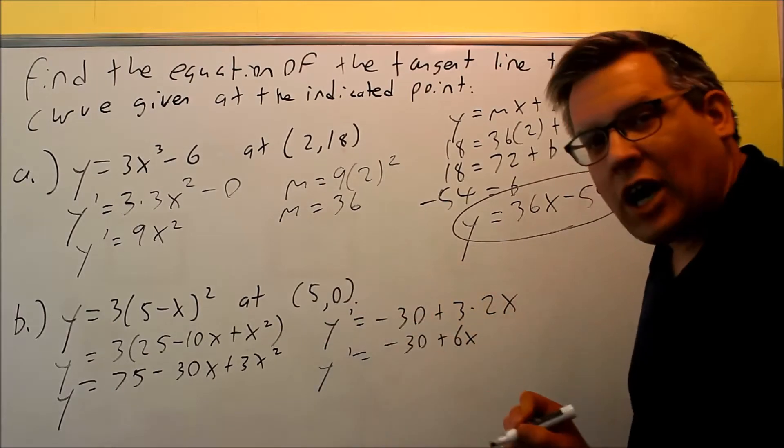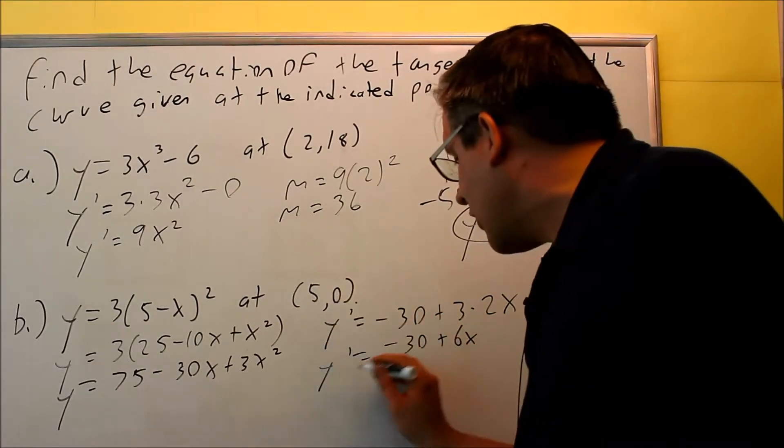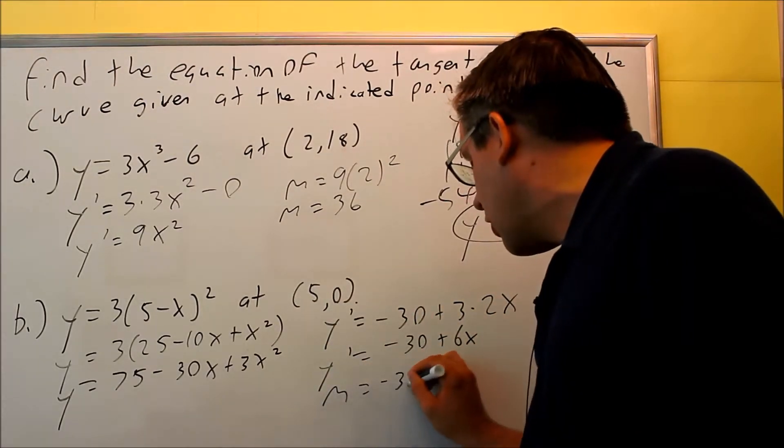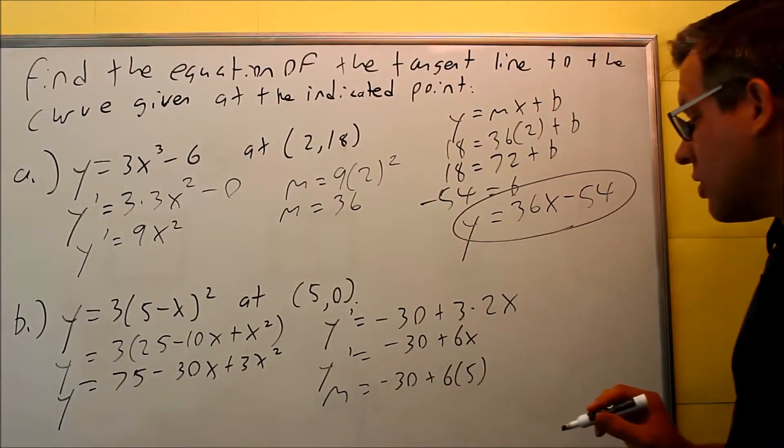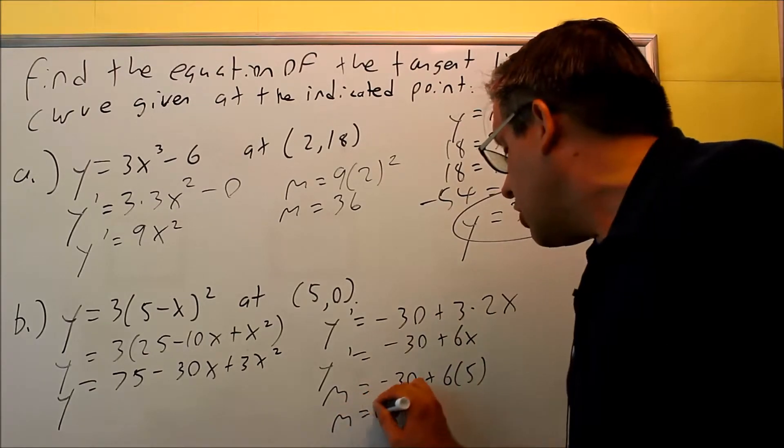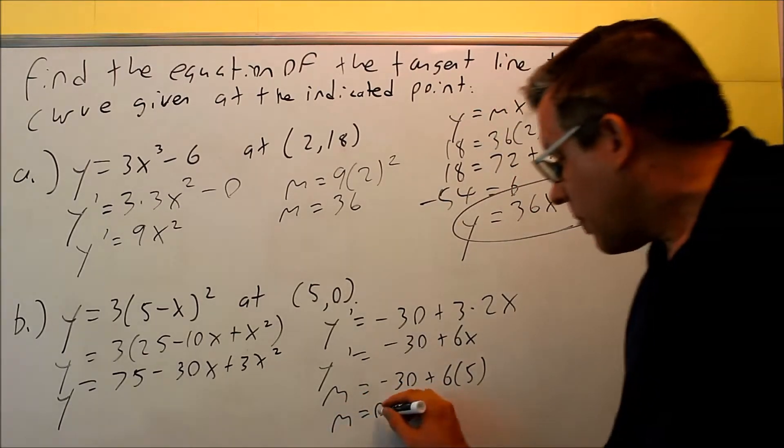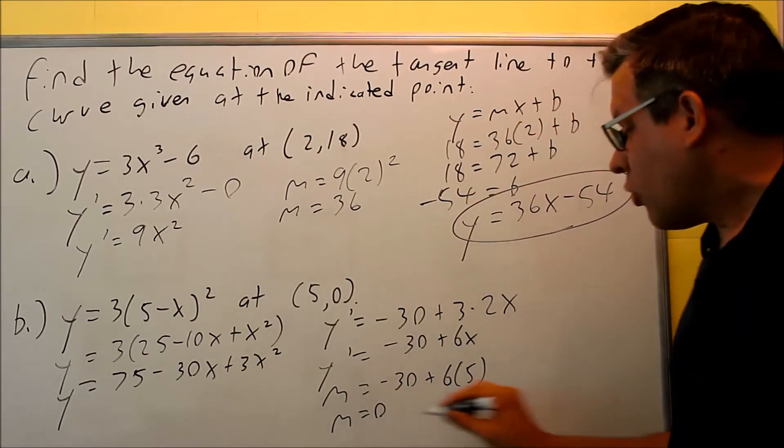To find the slope, we're going to put a 5 in there, that's your x value. So negative 30 plus 6 times 5. And what happens here is this cancels and you get 0. So that means the slope is 0.